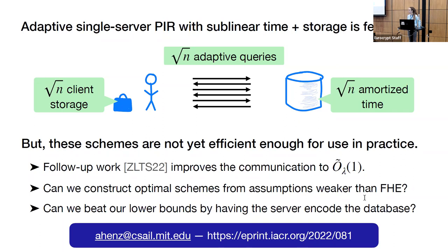Question: if the server has a database where the records are of length m instead of one bit, how does this work? The simplest way to handle this is to run the PIR scheme m times, each time on a database of size n, where the first database contains the first bit of each record, the second database contains the second bit, and so on.